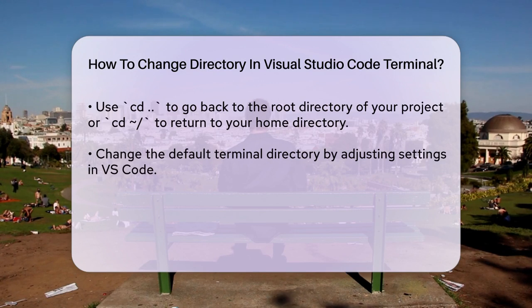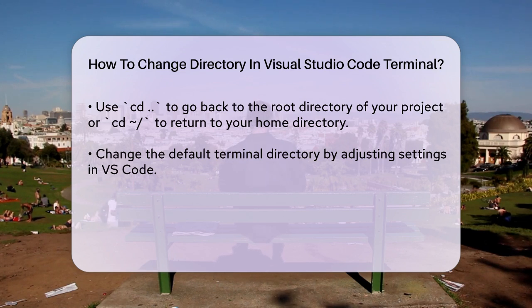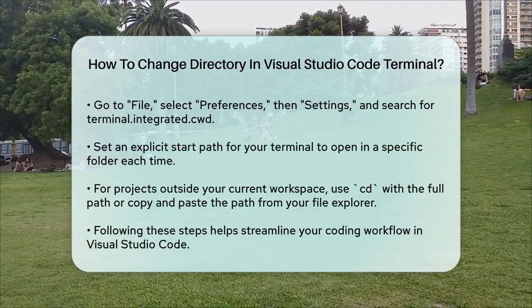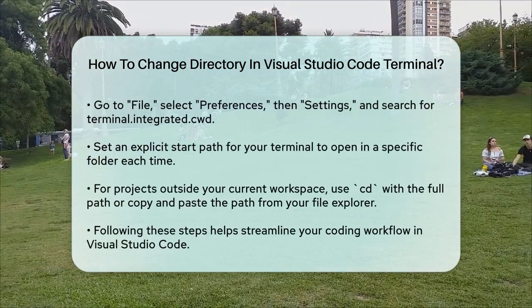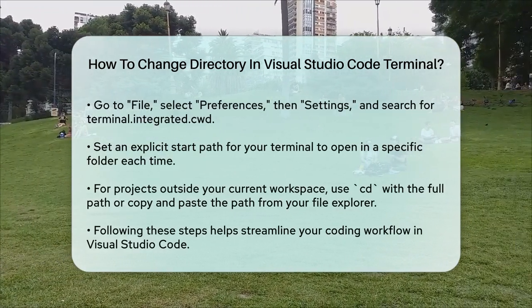What if you want to change the default terminal directory so it opens in a specific folder every time? You can do this by adjusting the settings in VS Code. Go to the File tab, select Preferences, then Settings, and search for terminal.integrated.cwd in the Settings search bar. Here, you can set the explicit start path for your terminal so it always opens in the directory you specify.